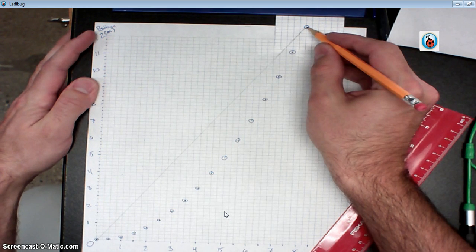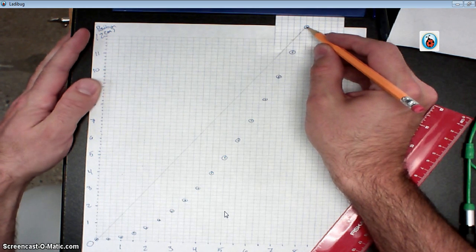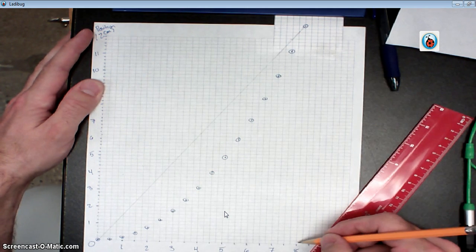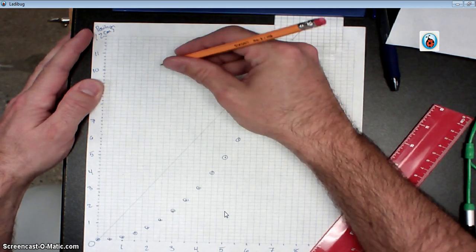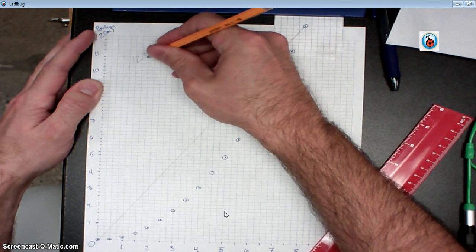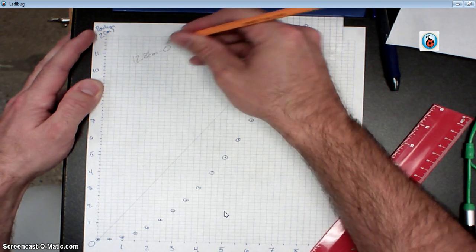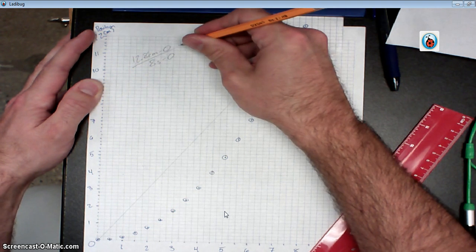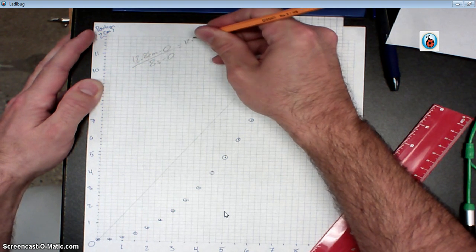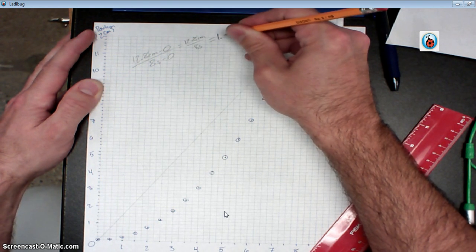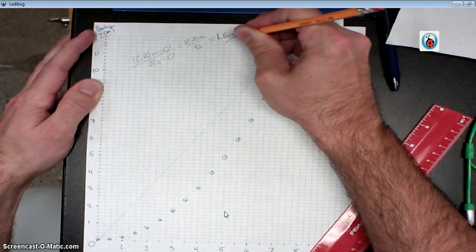And let's see, this data point is 12.8 centimeters at 8 seconds. And I began at 0, 0, so I'm going to have 12.8 centimeters minus 0. Divide that by 8 seconds minus 0. 12.8 centimeters over 8 seconds. That works out to be 1.6 centimeters per second.